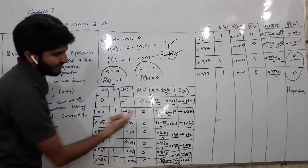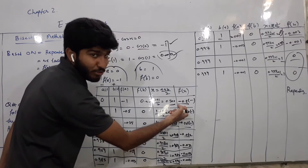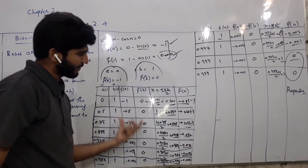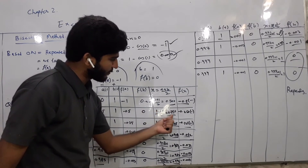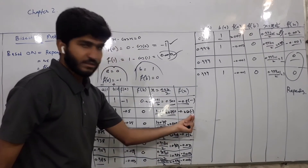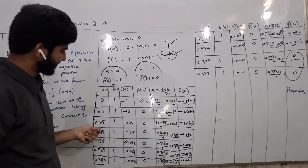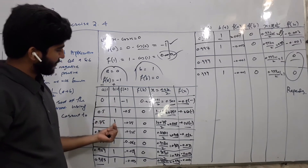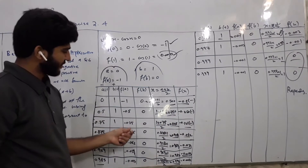a = 0.5 رکھا، function of a = minus 0.5. Function of b change نہیں ہوگا، same ہے. پھر a plus b divided by 2: (0.5 + 1) / 2 = 0.75. یہ function میں put کیا تو minus 0.25 آیا — negative آ رہا ہے. تو negative کی جگہ a = 0.75 replace کریں گے. Function of a = minus 0.25.